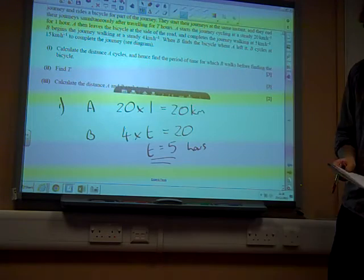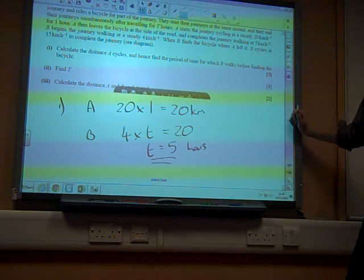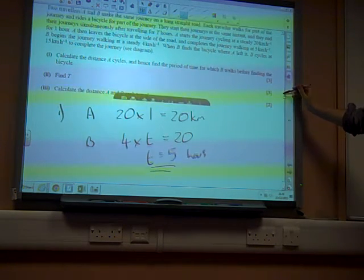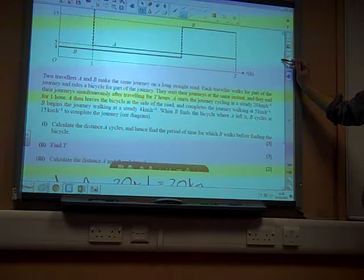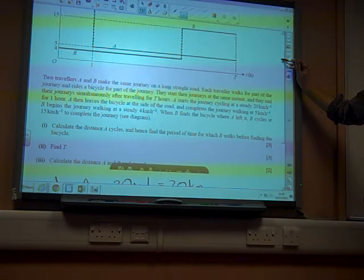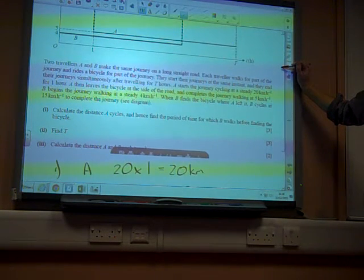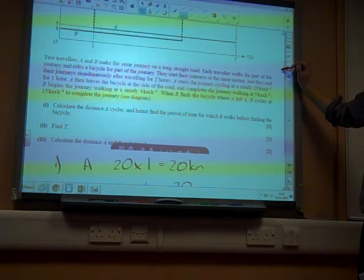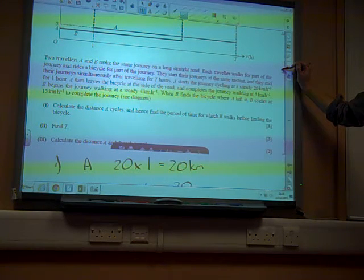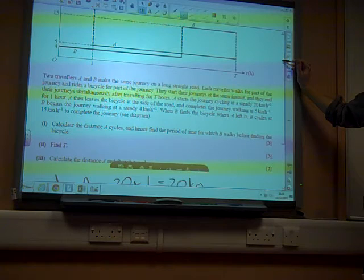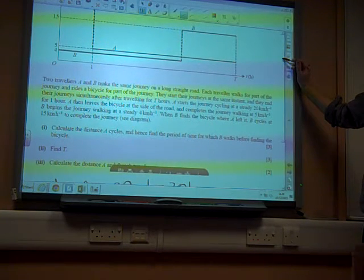We used little T, but it should have been a big T, shouldn't it? No, that is little T. What next? Find T. So they start their journeys at the same instant, and they end their journeys simultaneously after travelling for T hours.